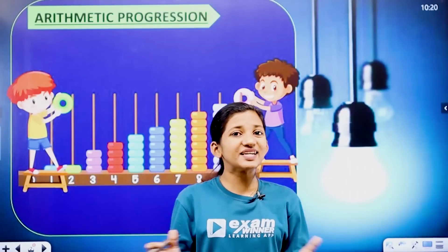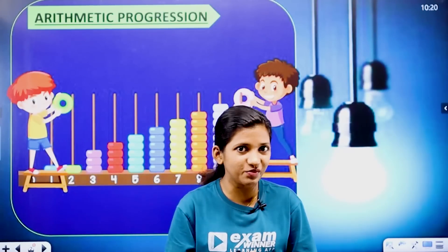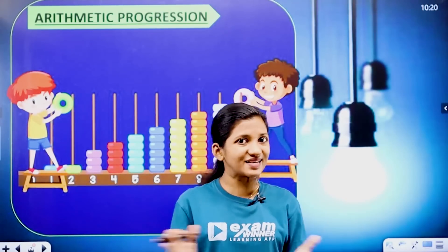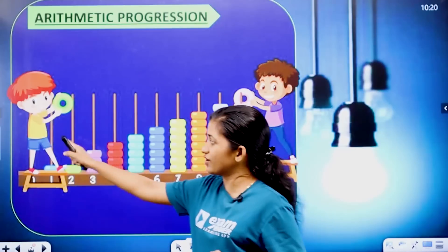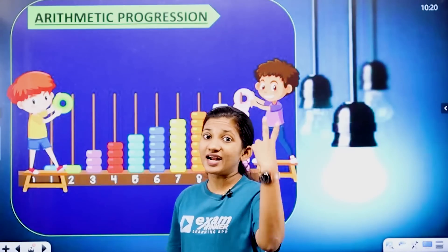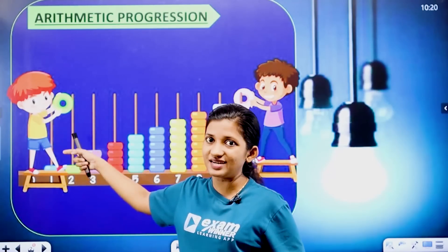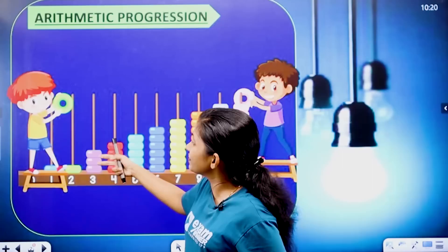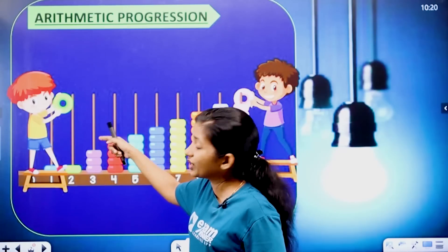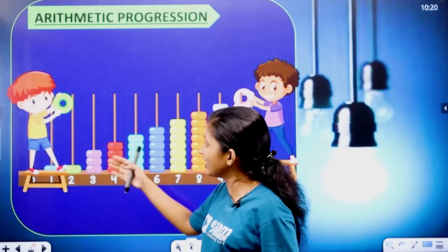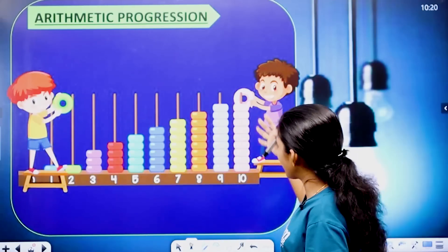Hi friends! We are learning how to count using an Abacus. In the second class, we have one circle in the first row. In the second row, we have two circles. In the third row, we have three circles. In the fourth row, we have four circles. We have learned counting up to 10.